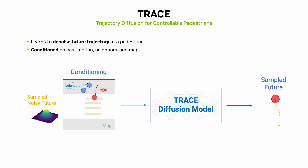Trace is a learned model that generates future trajectories for a pedestrian through denoising. As input, the model takes in random noise that's treated as an initial future trajectory. It denoises this trajectory conditioned on the past motion for that pedestrian, the motion of its neighbors, and a map which gives information about sidewalks, obstacles, and streets in the scene. Trace is trained on actual pedestrian data, which allows it to generate realistic motion that reflects real-world pedestrians.